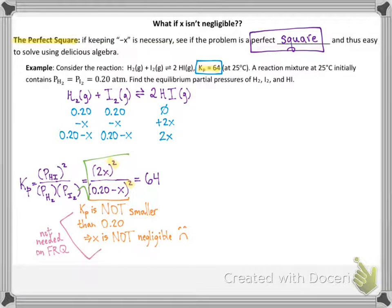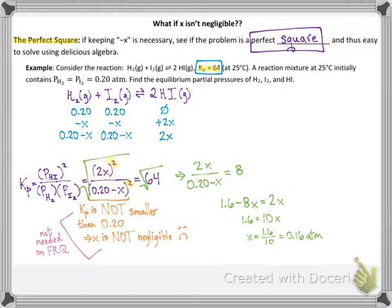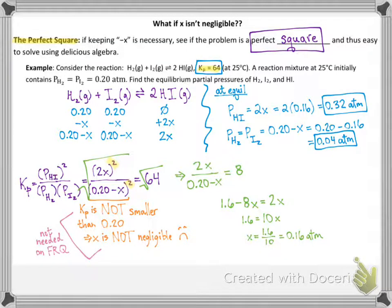Here's the part you were looking for — even though x is not negligible, you can still simplify because you've got something squared on the top and something squared on the bottom. To solve this, you just take the square root of one side and set it equal to the square root of the other side. And look at that — we have 2x over (0.2 minus x) equal to 8, with no more x² term. Once you solve for x, plug in to find the equilibrium partial pressures. When you do, you can see that x is most definitely not negligible — subtracting x takes away the vast majority of the initial reactants, which makes sense because k is greater than 1.